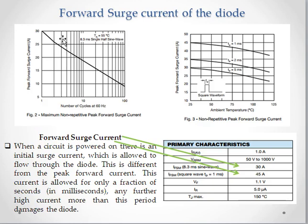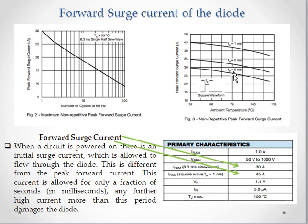The graphs included in the diode datasheet give a clear indication of the forward surge current. Based on the pulse width, you can see that as the pulse width increases, the forward surge current gets reduced. This is given at a pulse width of 1 millisecond, and as the pulse width increases the forward surge current decreases.